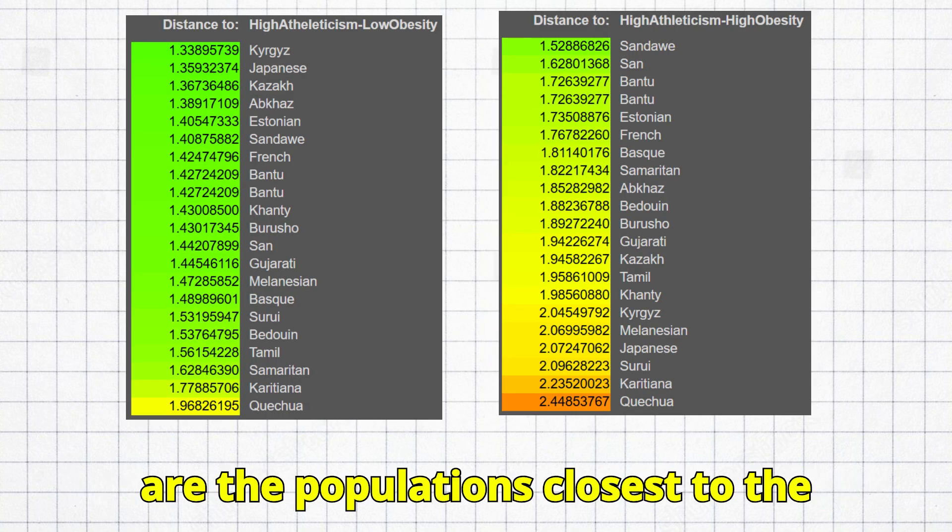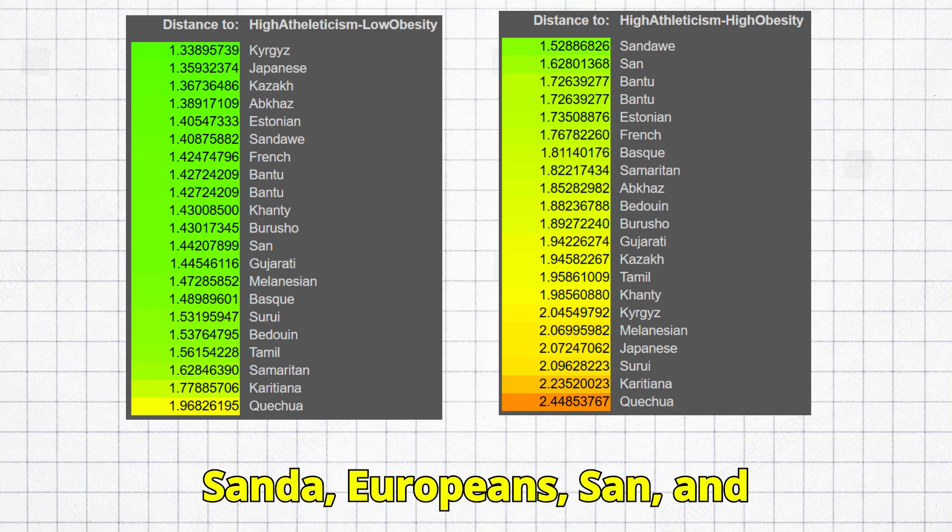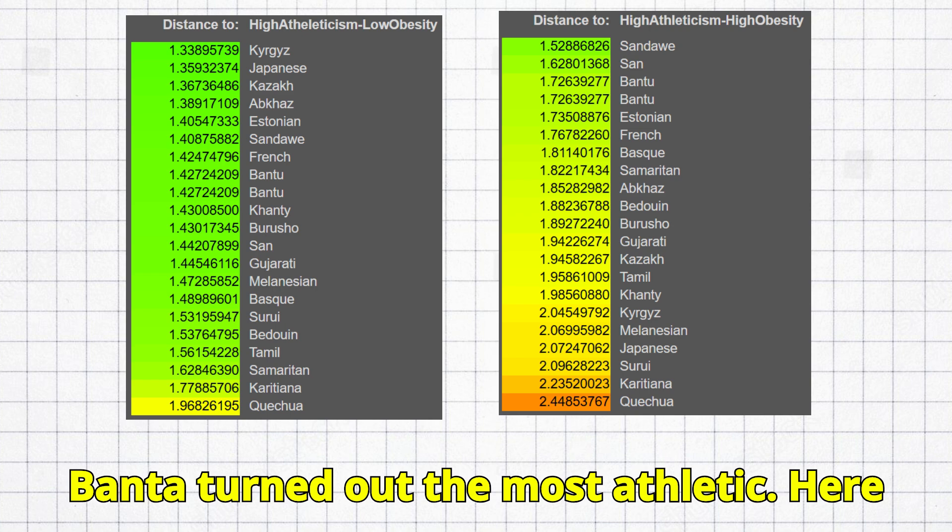Here are the populations closest to the athletic anchors. East Asians, Sandaw, Europeans, San, and Bantu turned out the most athletic.